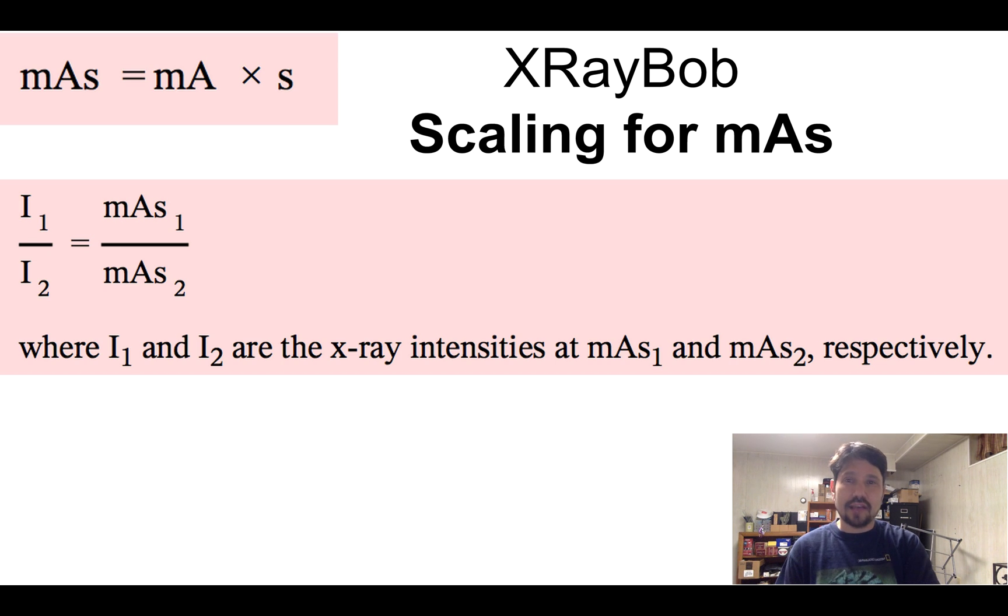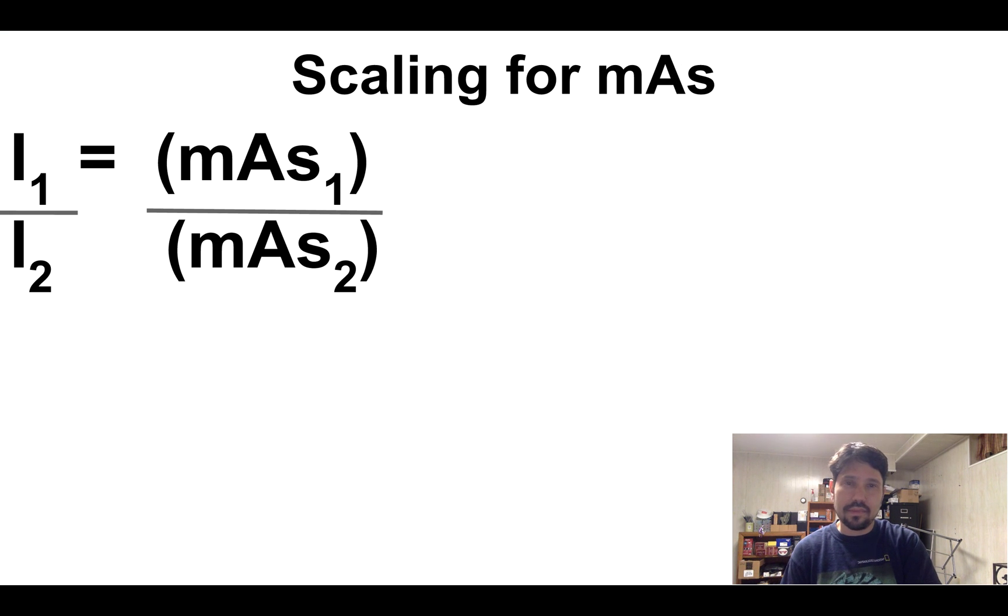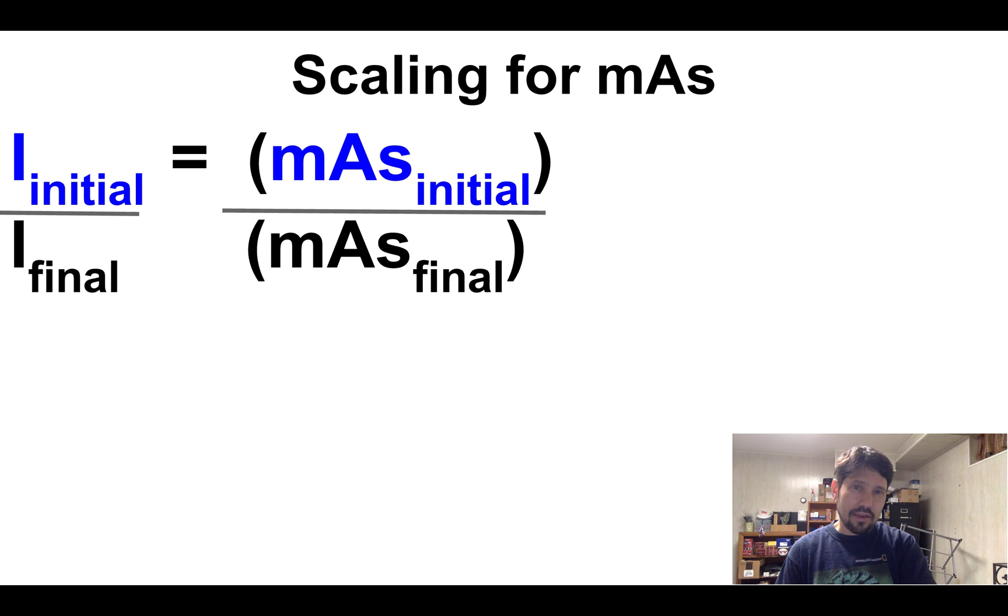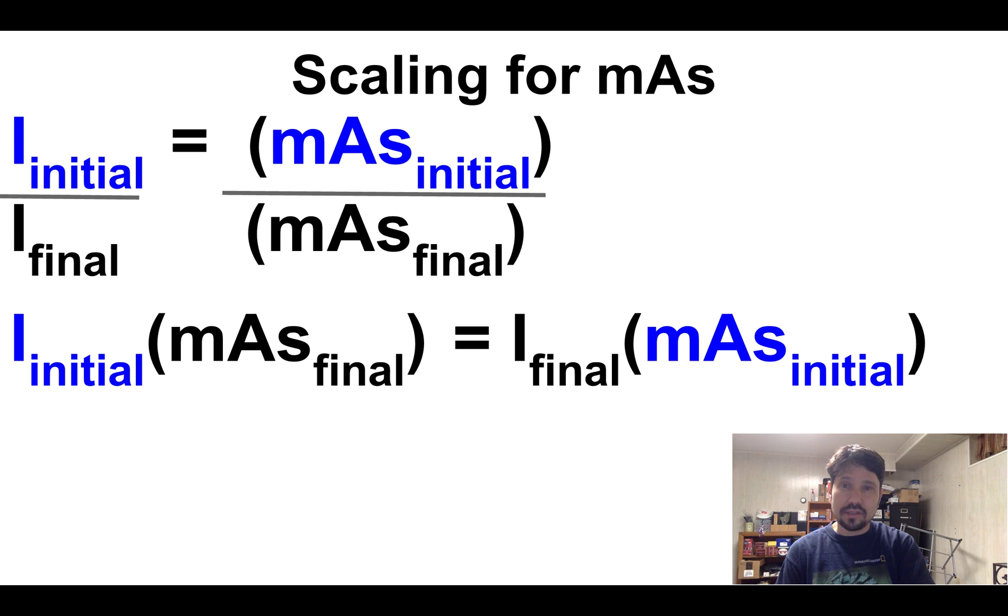I know Bouchong presents it as I₁ over I₂ equals mAs₁ over mAs₂. So let's do the proof of how I get my formula from there. Also, you'll need to know mAs is mA times time. So here's Bouchong, I₁ over I₂ equals mAs₁ over mAs₂, and I can relabel them where I see the number 1, I'll put initial. So I'll have intensity initial over intensity final equals the initial mAs over the final mAs. So there's my new equation, and I can go ahead and cross multiply.